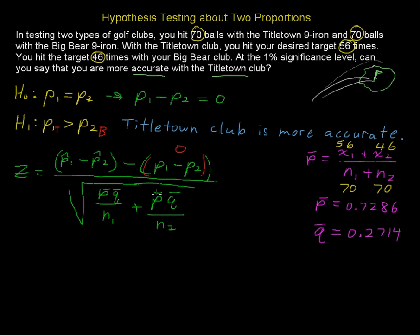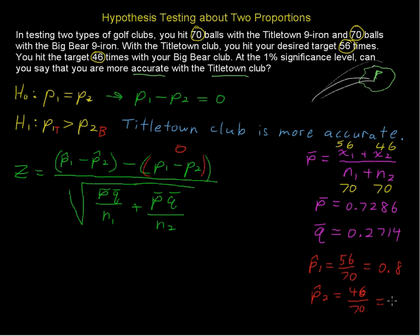We also need p-hat sub 1 and p-hat sub 2. p-hat sub 1 for the Titletown club is 56 divided by 70, which equals 0.8. p-hat sub 2 equals 46 divided by 70, which equals approximately 0.6571. We'll be plugging those into the numerator, along with p-bar and q-bar in the denominator.